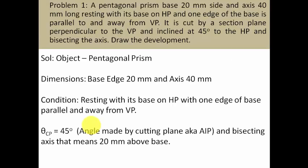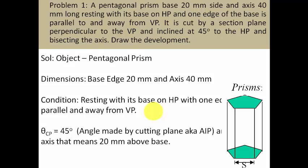We'll start by drawing an XY reference line and begin with the top view. Since the pentagonal prism is resting with its base on HP, the true shape of the base can only be seen from the top. We also need to ensure that one edge of the base is kept parallel to this XY line, because the question states that one edge must be parallel to the VP. The internal angle of a pentagon is 108 degrees, and each side is 20 millimeters.